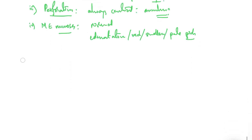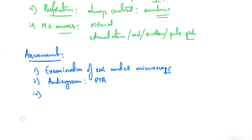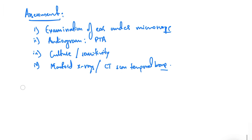For assessment, first perform examination of the ear under the microscope. Then order an audiogram to detect the type and degree of hearing loss. Collect the discharge for culture and sensitivity to determine the bacteria present. You can also order a mastoid X-ray and a CT scan of the temporal bone to detect any bone-eroding process or complications.